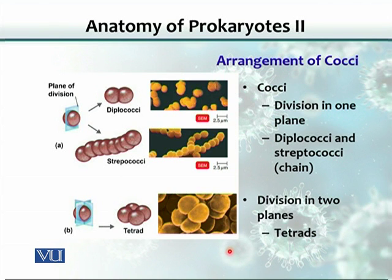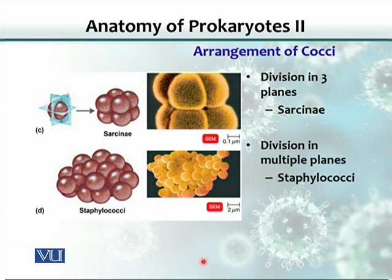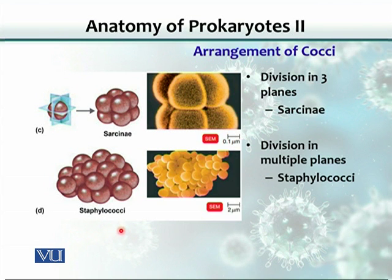If spherical bacteria divide in multiple planes, two planes can give rise to four cells — a combination of four cells is called a tetrad. If there are three planes of division, it results in eight cells, and that eight-cell aggregation is called sarcinae. If the planes of division are many, we end up with a bunch of cells called staphylococci. Scanned electron micrographs illustrate these spherical-shaped bacterial arrangements.